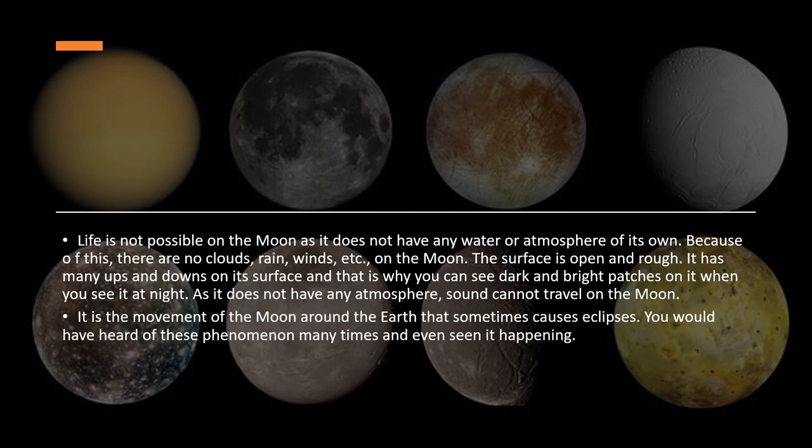Life is not possible on the moon because it has no atmosphere. When there is no atmosphere — no layer of air — there will be no clouds, no rain, no wind. The surface of the moon is open and rough with lots of ups and downs, which we can sometimes see at night as bright patches. Sound also cannot travel on the moon.